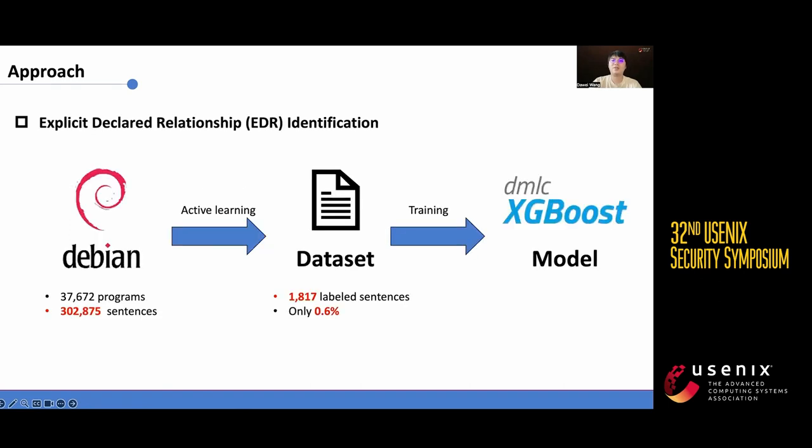Regarding explicit relationship declarations, we employ machine learning techniques for recognition. However, a major challenge arises from the lack of readily available training datasets. To overcome this issue, we employ active learning techniques to select the most valuable data for manual labeling.